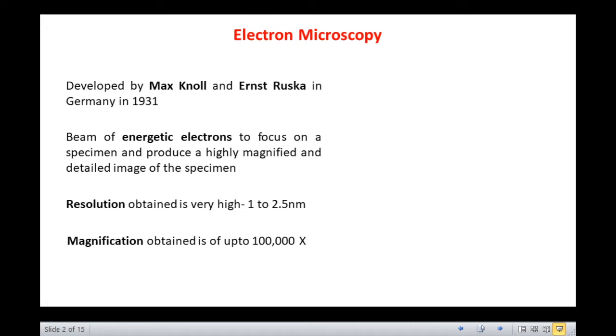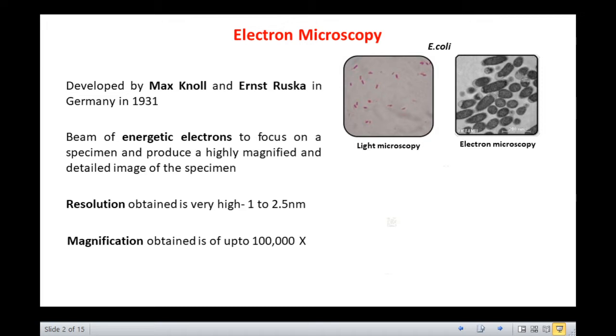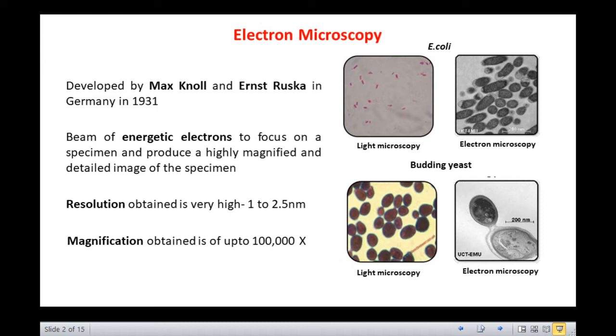I will show you a few comparative photographs so that you get an idea about how magnified and clear images are formed using electron microscopy. This is E. coli under 1000x light microscopy and this is E. coli under electron microscopy. Budding yeast under light microscopy and under electron microscopy.